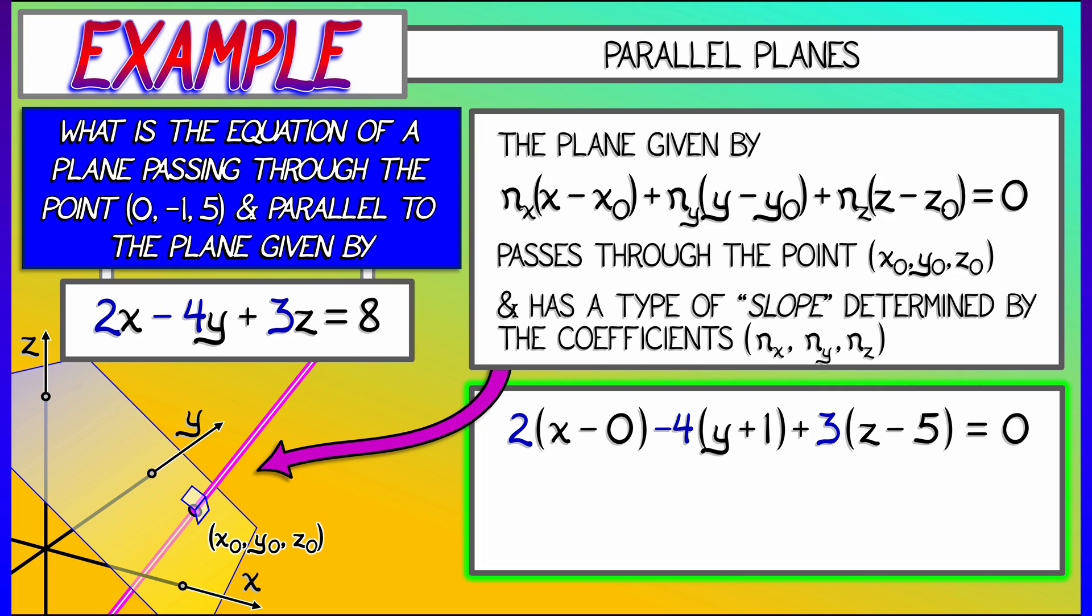Don't forget the 0 on the right-hand side. And then if we distribute that multiplication, expand things out, simplify, we get 2x minus 4y plus 3z equals 19. Now notice, that is a parallel plane. It's got the same coefficients out in front. But now the point (0, -1, 5) satisfies this equation, so the plane passes through that point.